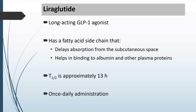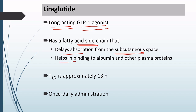The next drug is Liraglutide. It is a long-acting GLP-1 agonist, and it is long-acting because it has a fatty acid side chain. Due to this fatty acid side chain, there is delayed absorption of the drug from the subcutaneous space into the circulation. Also, the fatty acid chain helps in binding of the drug to albumin and other plasma proteins, reducing the free drug available in the circulation. Due to these two effects of the fatty acid side chain, Liraglutide is a long-acting GLP-1 agonist.